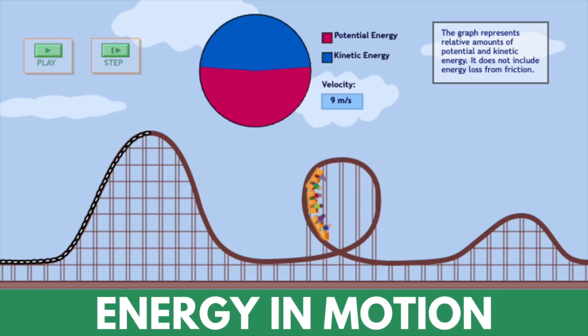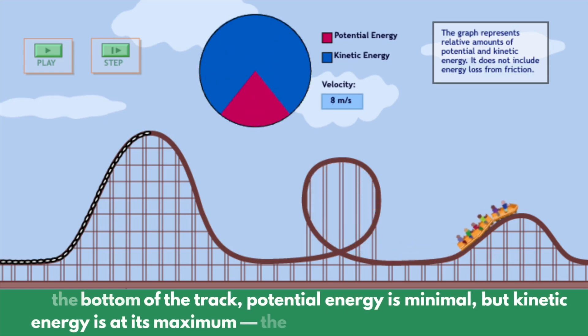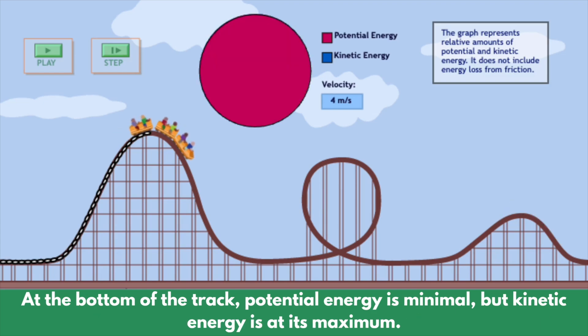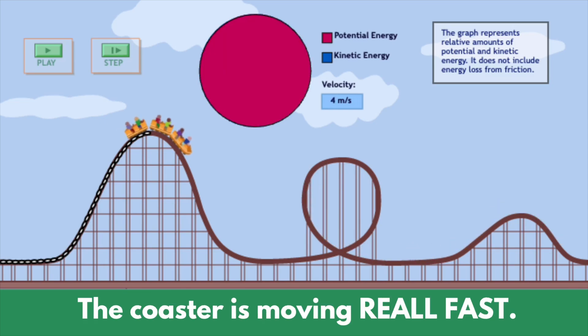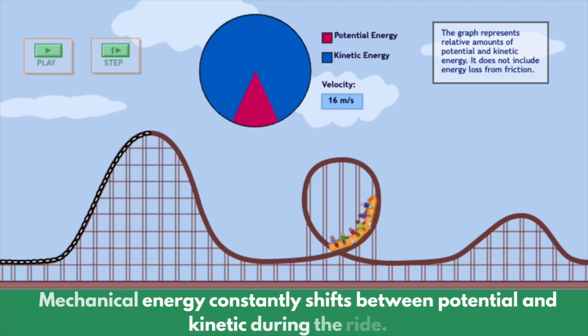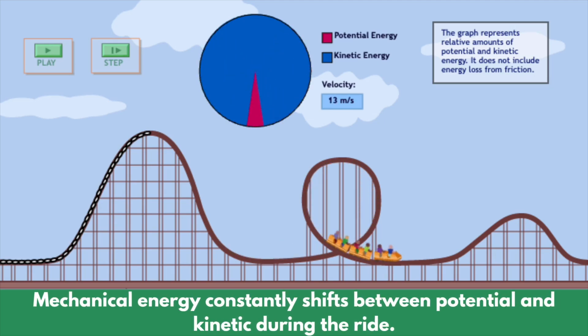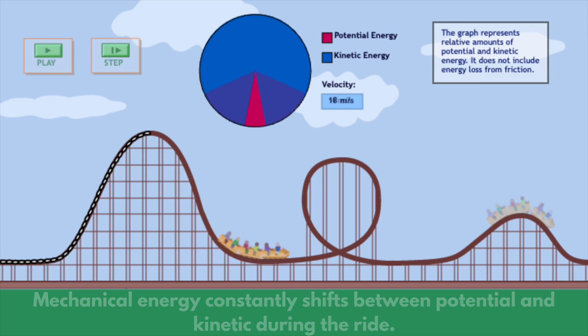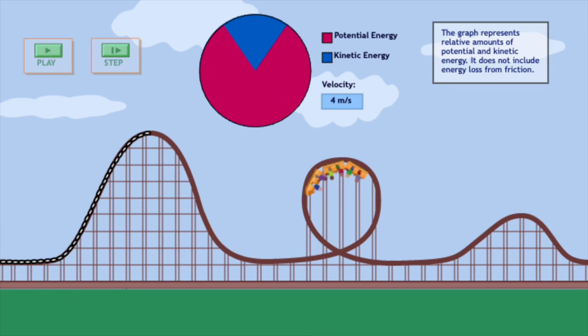By the time it reaches the bottom of the track its potential energy is low, but its kinetic energy is at its peak - it's moving really fast. Throughout the ride mechanical energy keeps shifting between potential and kinetic, back and forth. But the total stays the same as long as we ignore friction and air resistance. It's a perfect example of how energy transforms without being lost.